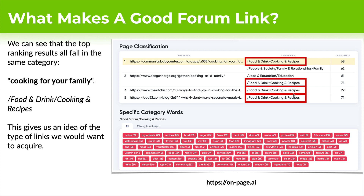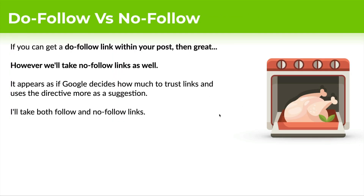This gives us a really good idea of the types of links we'd want to receive for our page. The first step to getting a good forum link is making sure it's related — and if you can narrow it down to a precise category, that's even better. If you can get a do-follow link within your post, that's great — the cherry on top. However, as long as it's related, I'll take no-follow as well. It appears Google uses no-follow more as a suggestion rather than an absolute rule. I've seen no-follow links help with rankings, and some no-follow links do absolutely nothing. I'll take both follow and no-follow as long as it's a good link that could drive traffic and is related to my content.